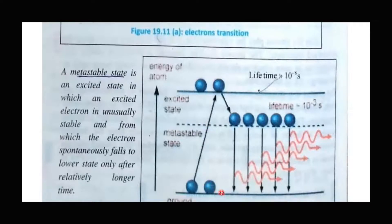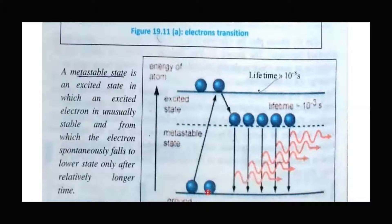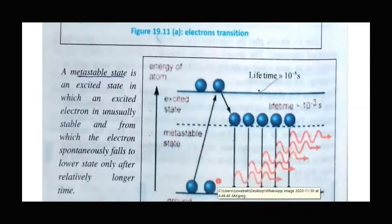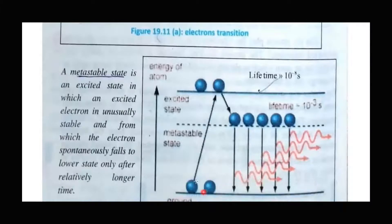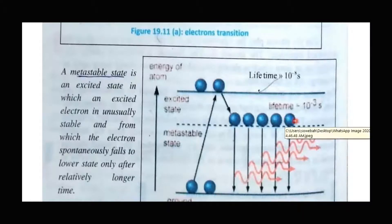Laser action starts with population inversion. Population means number — specifically, the number of excited atoms and electrons. Just as population represents number of people, in laser action, population means the number of excited atoms and electrons in a higher energy level. If you have many excited atoms in the second energy level, you have population inversion, and you will be ready to start laser action.